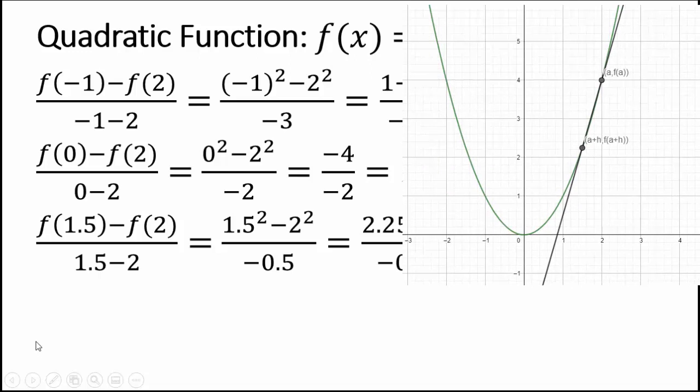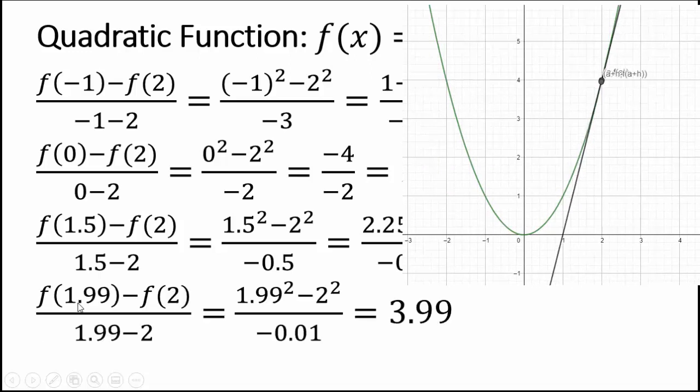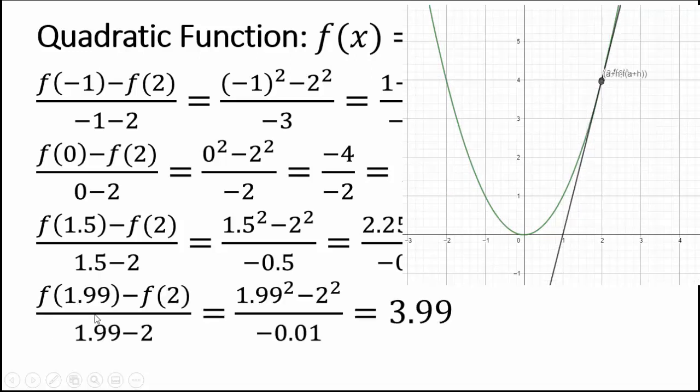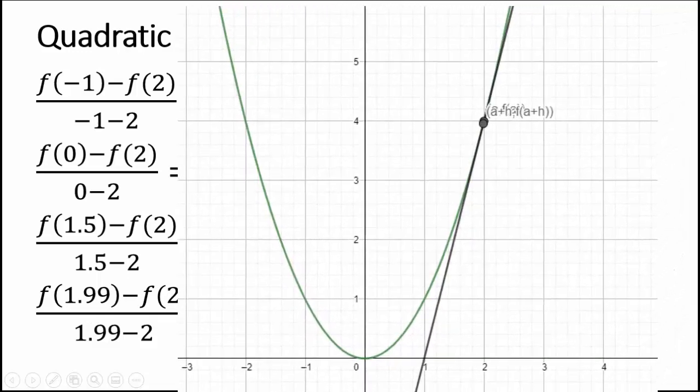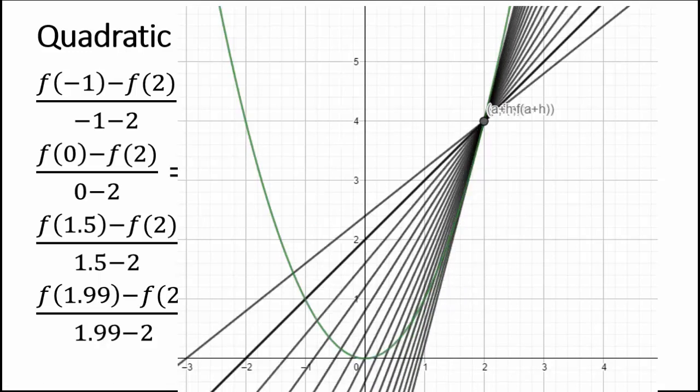Now what? What if I go a little more closer to 2? I'll go to 1.99, and you will see I get 3.99. If you keep going closer and closer to 2, you will see that those lines are going to have slope very close to 4. This is an important concept in calculus, because it allows you to get instantaneous rate of change, and not just average rate of change.